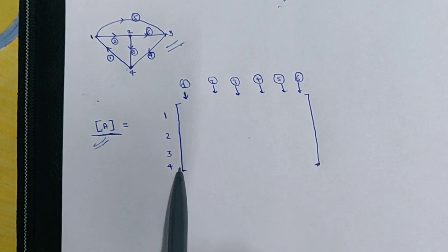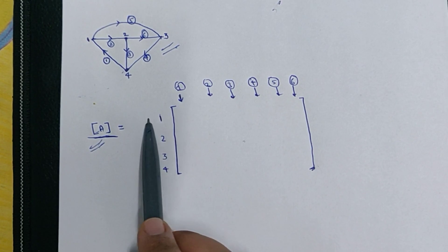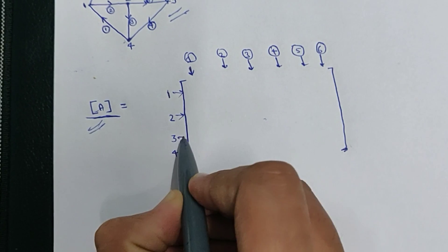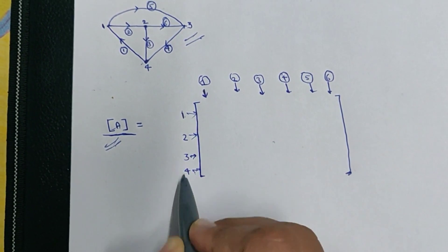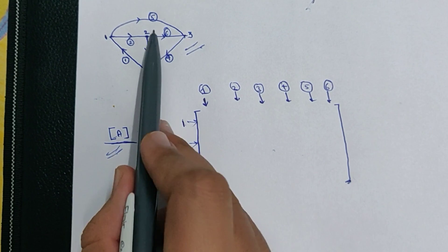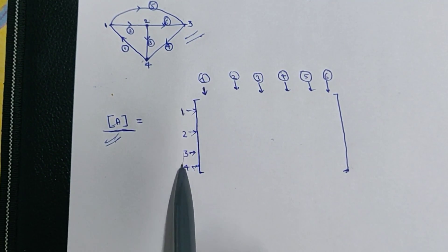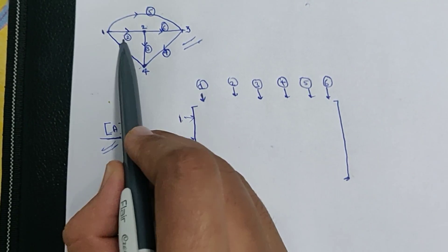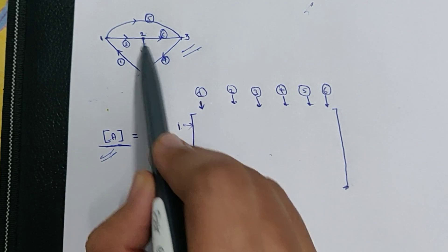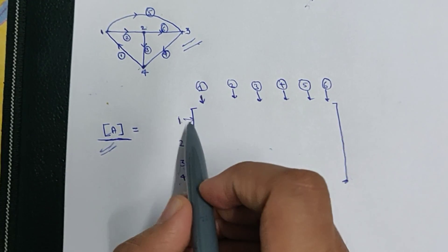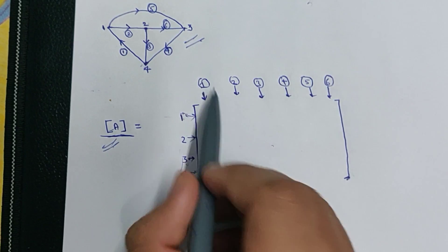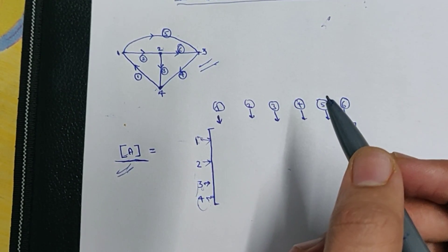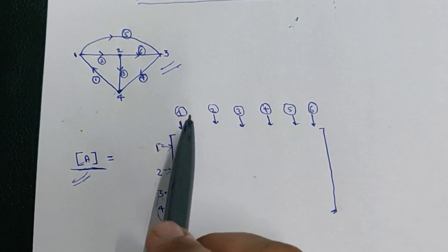In an incidence matrix, first we draw a matrix. On the row sides, these represent the rows of the matrix. I will write the node points here — 1, 2, 3, 4 — the node points will be written along the rows. Along the columns, you will write the branches — 1, 2, 3, 4, 5, 6. These branches are circled. I will write the nodes here and the branches here so that it is easy to create the matrix.